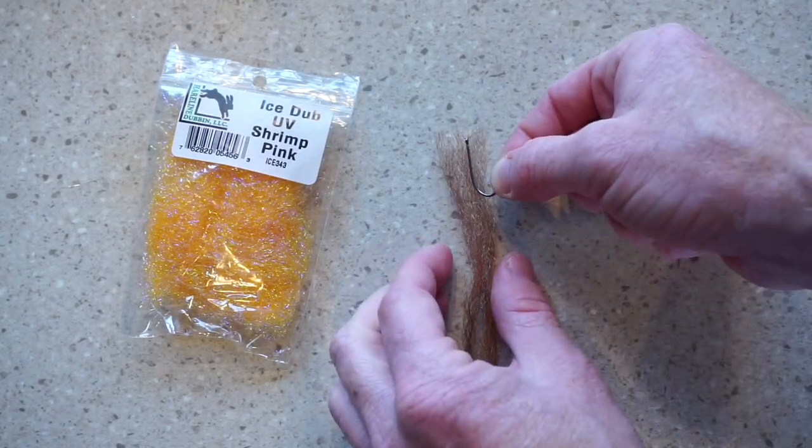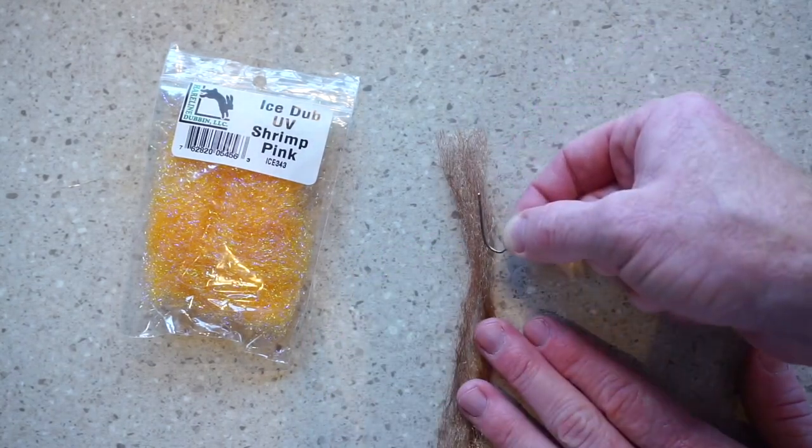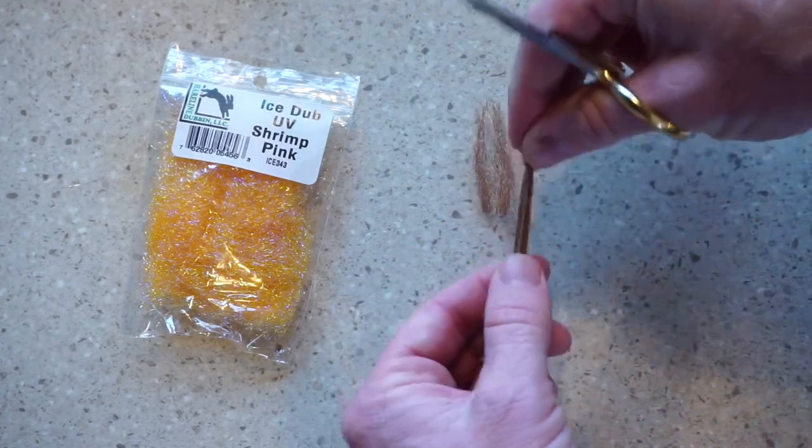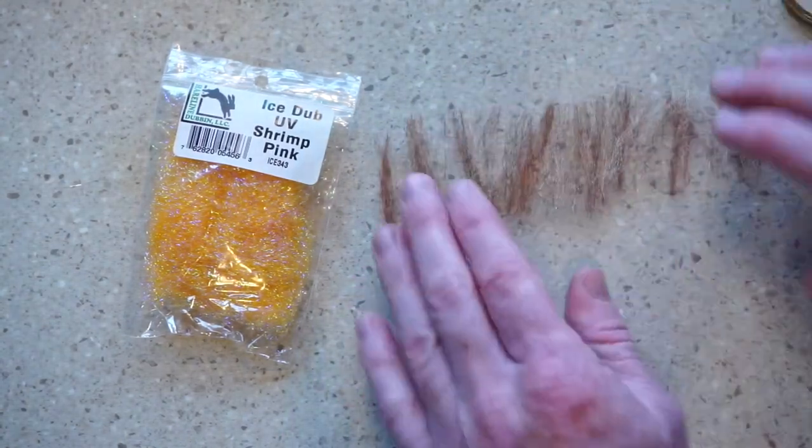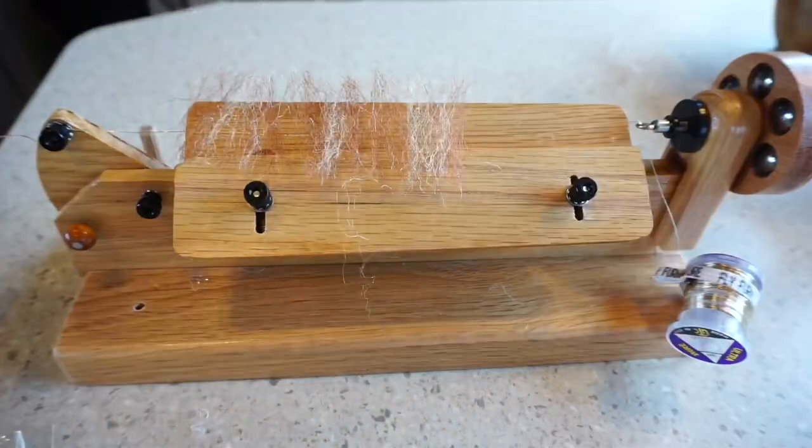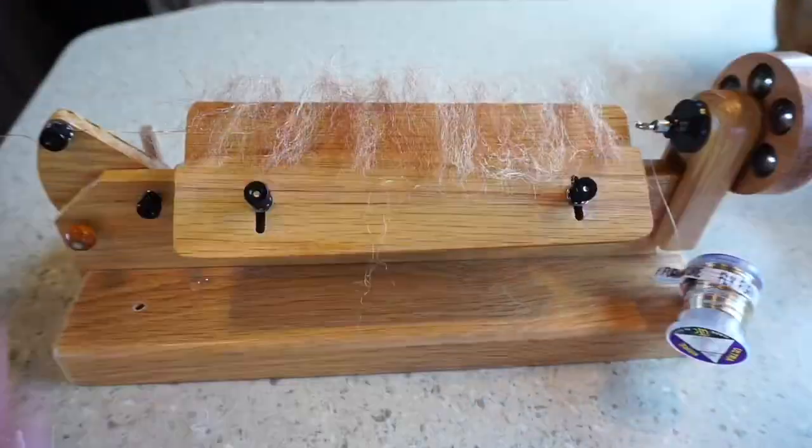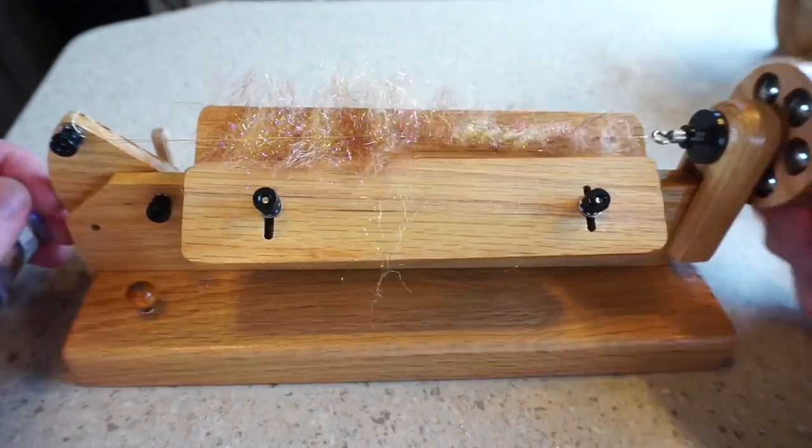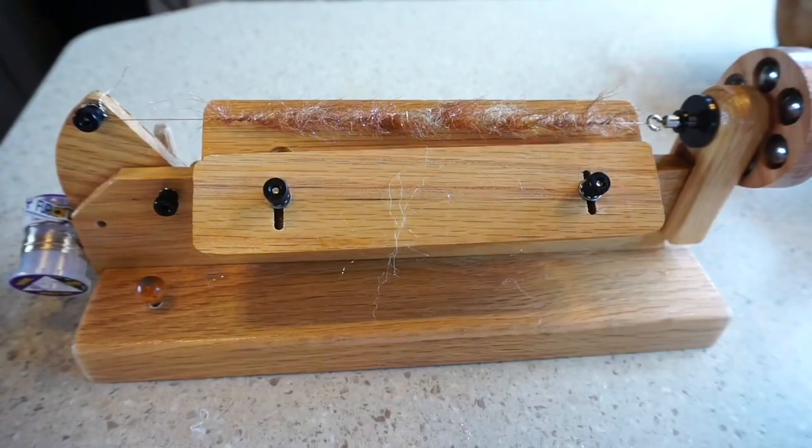Then cut these into strips about as long as double the hook shank. Like with any dubbing brush, just lay your base material down and then layer it with other materials. In this case I'm using ice dove for some flash. Of course brush it out and spin it multiple times to make it durable.